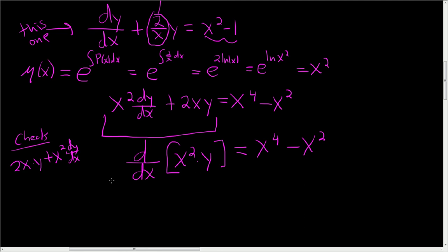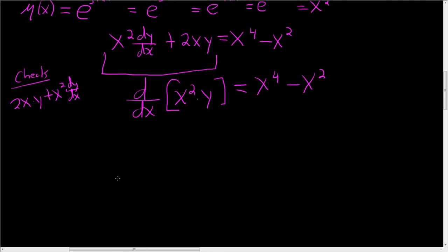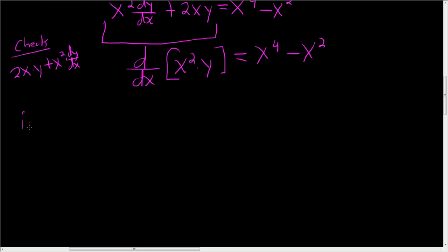To get rid of the derivative, we have to integrate both sides. So when you integrate, the derivative goes away. So you get x squared y equals,